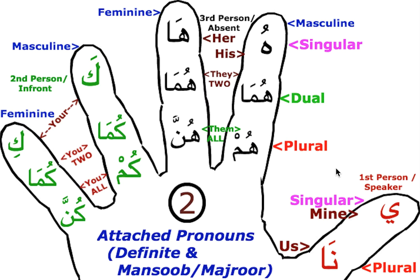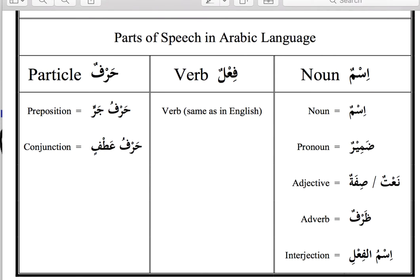Before I move on to the actual pronoun conjugation, I will try to explain three basic things slowly which will help going forward inshallah. We already know that Arabic words should fall in one of three groups: the particle, the verb, or the noun. In Arabic we call these ism,